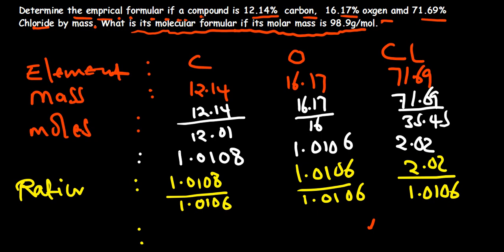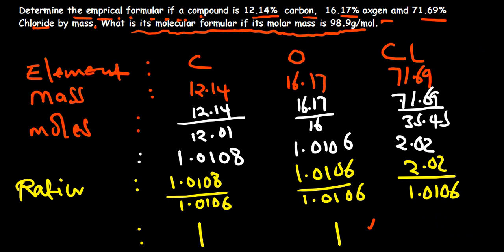Get your calculators and find the answers. When I divide, I'm getting 1 for carbon. Even for oxygen I'm getting 1. And then for chlorine I'm getting 1.998. This 0.998 is greater than 0.8, so we can round it off to 2. So these are our ratios to use in our empirical formula.